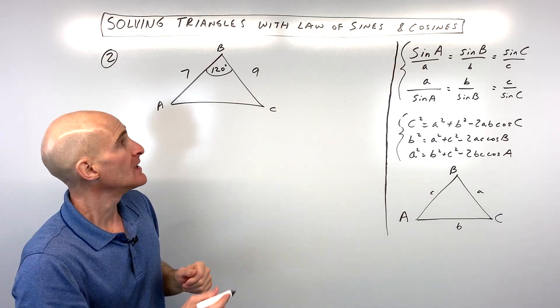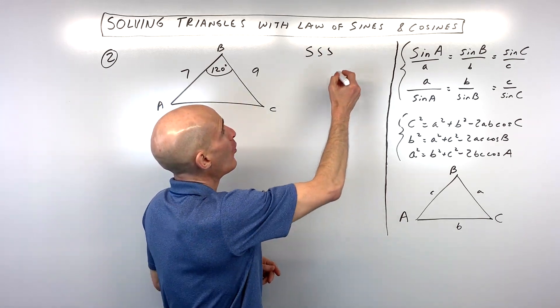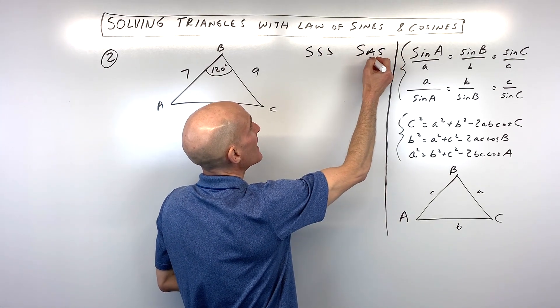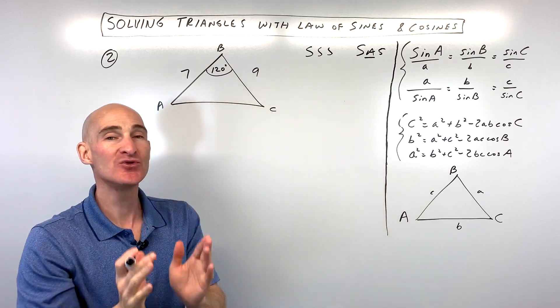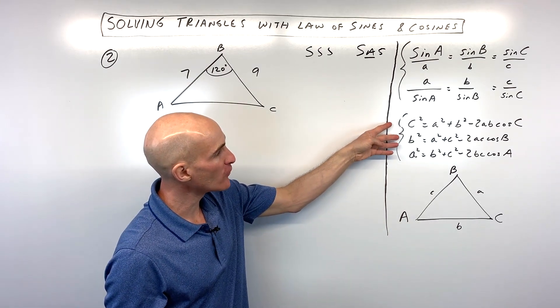Whenever they give you side, side, side, like three sides and nothing else, or side, angle, side, meaning the angle in between the two sides, that's when you're going to have to start off by using the law of cosines. And that's these three formulas right here.